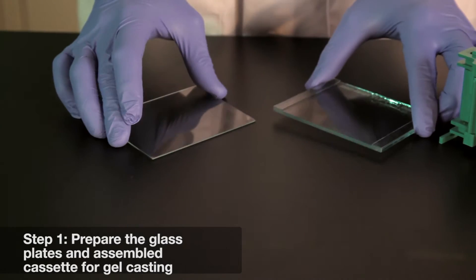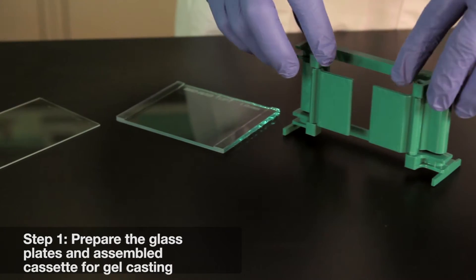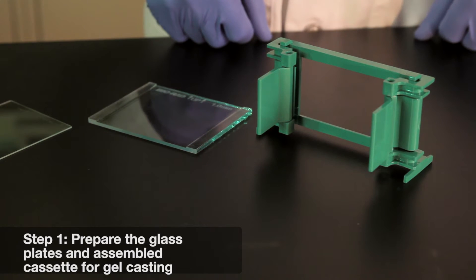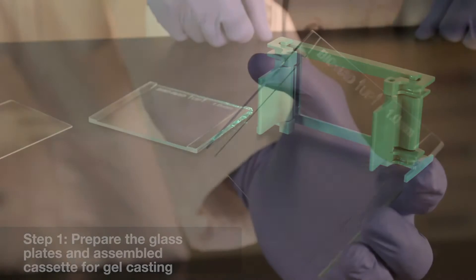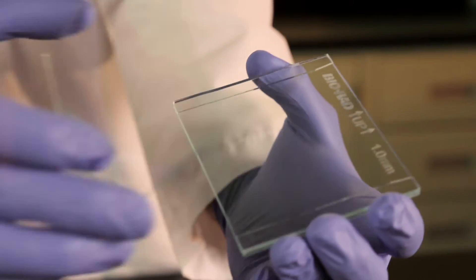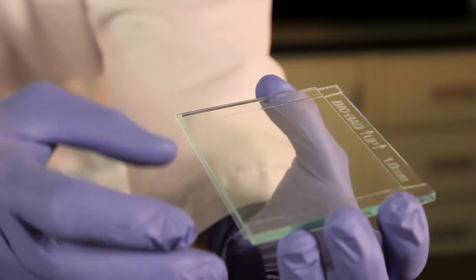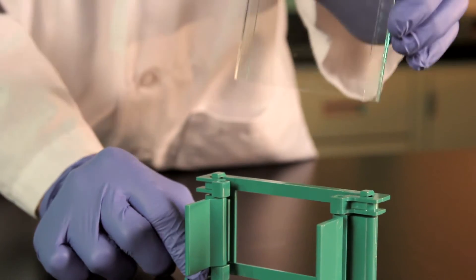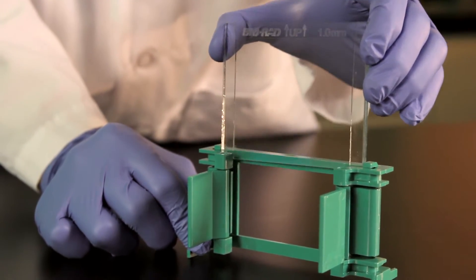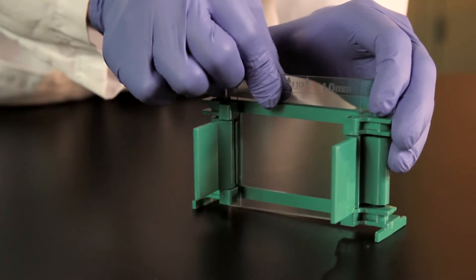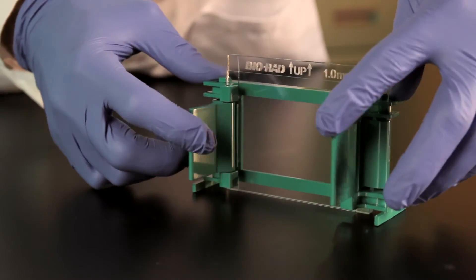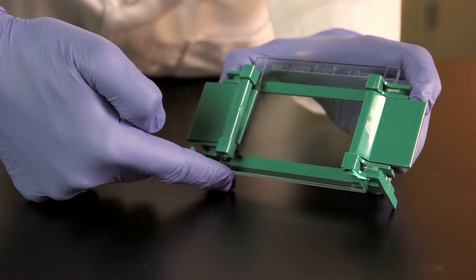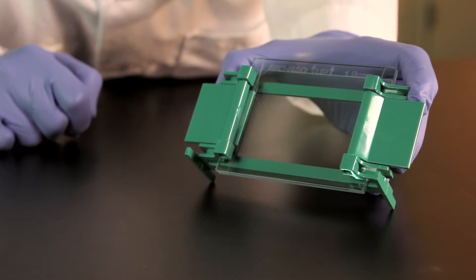The first step is to ensure that all glass plates are clean and dry. Place the casting frame upright on a flat surface with the pressure cams in the open position. Select a spacer plate of the desired gel thickness and place a short plate on top. Slide the two glass plates into the casting frame, ensuring that both plates are flush on a level surface to avoid leakage. Engage the pressure cams to lock the glass plates in place and check once more that the bottom of both glass plates are flush.